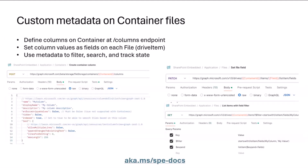If you've ever worked with SharePoint it's kind of similar, but if you haven't, no big deal. On the left side you can see a Postman request, and I'll show you this in action later. You can define the columns on a container using the slash columns endpoint. There's a handful of column types supported — like text, Boolean, person or group, and so on. The full set is documented in our Postman collection and in our documentation at aka.ms/sbe.docs. Once you've defined columns and start uploading files, you can set fields on those files — fields are just the values for those columns on a particular file in that container. You use the slash list item slash fields endpoint on a file and provide a JSON object for the fields you'd like to set.